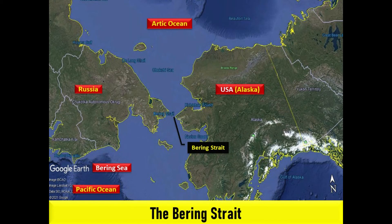The Bering Strait is a strait of the Pacific which separates Russia and the United States slightly south of the Arctic Circle at about 65 degrees 40 N latitude. Located between Alaska and Russia, the Bering Strait is the only marine gateway between the icy Arctic and the Pacific Ocean. At its narrowest point, the strait is only 55 miles wide. The strait is named after Vitus Bering, a Danish explorer in the service of the Russian Empire.